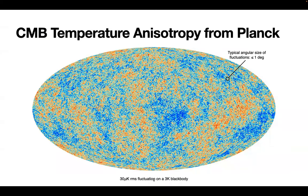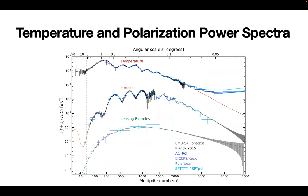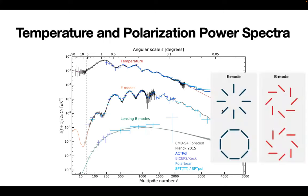This is the familiar map of the temperature anisotropy. These typical fluctuations are of angular size about one degree in the CMB temperature anisotropy, with an amplitude of about 30 micro-Kelvin on top of this 3-Kelvin blackbody. What we're interested in is not map space but the power spectrum — the Fourier transform of the map — showing the amplitude of fluctuations as a function of angular scale. This shows both the temperature anisotropy and the polarization anisotropy: what we call E-mode and B-mode polarization, having no curl and no divergence respectively.